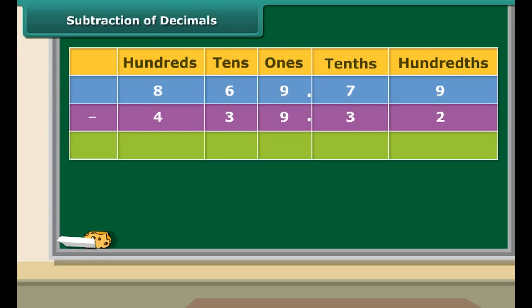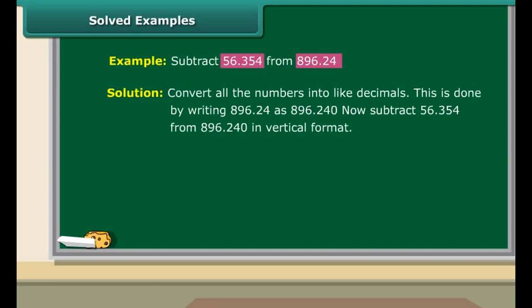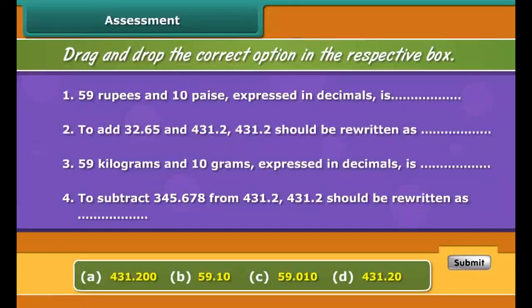Place the digits according to their place value in the table and subtract as in ordinary subtraction. Note that 56.354 and 896.24 are unlike decimals, so they must be converted into like decimals before performing subtraction. 56.354 has three decimal places whereas 896.24 has only two, so 896.24 must be written as 896.240. Now the subtraction can be performed.